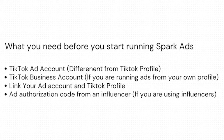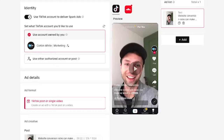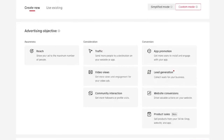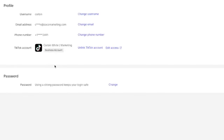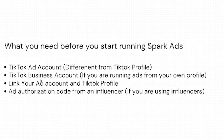Once you have your TikTok ads account and your TikTok business account, then you can link the two — that's the third thing you need to do. In your TikTok ads manager, click on the user settings in the right-hand corner and it will take you to a page that allows you to quickly link your account. You'll see something that says 'TikTok account' and then 'link account' — click that to link your TikTok ads account. The fourth thing you may need is the ad authorization code from the influencer if you are using one, and I will show you how to get that shortly.